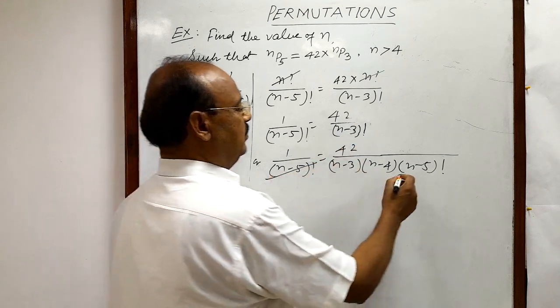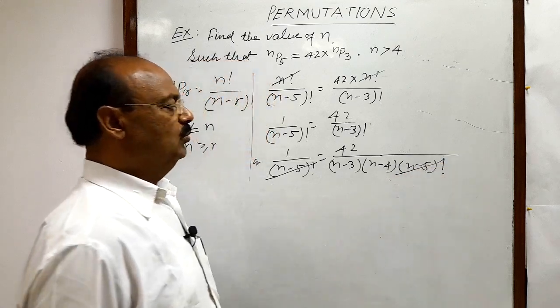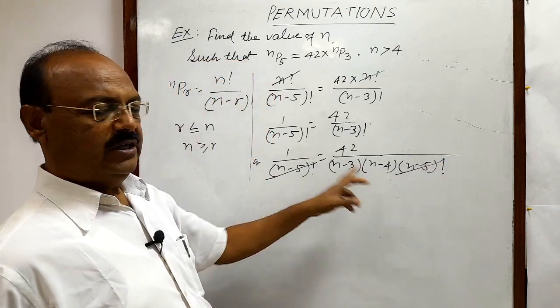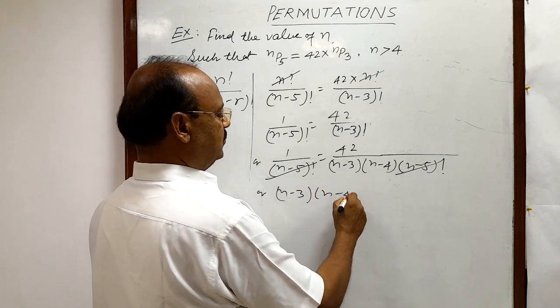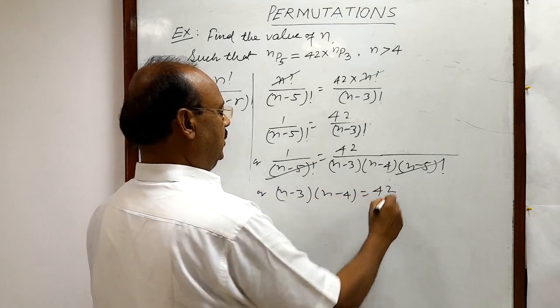N minus 5 factorial will be cancelled out from both the sides. Now, by cross-multiplication, we are getting N minus 3 into N minus 4 is equal to 42.